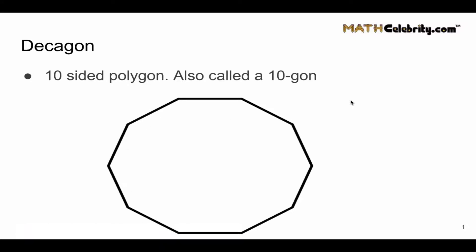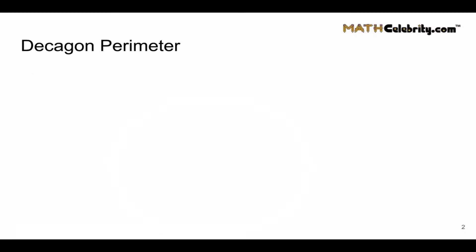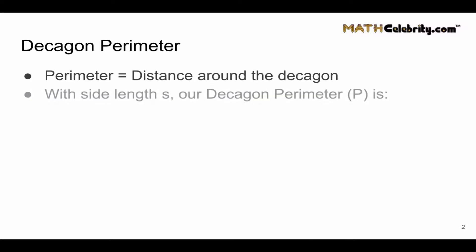Now I'm going to walk you through in today's video the different calculations for a Decagon. First, let's do Decagon perimeter. Perimeter, of course, is the distance around the Decagon. With a side length of s, our Decagon perimeter is 10 times s.